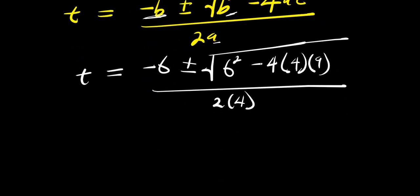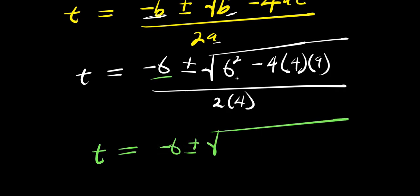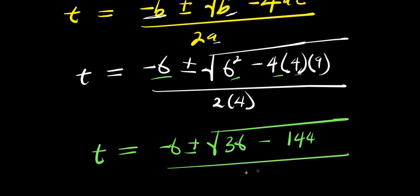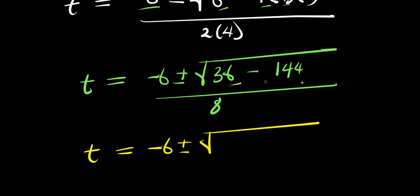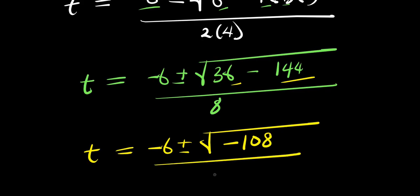Substituting into the formula: t equals negative 6 plus or minus square root of 6 squared minus 4 times 4 times 9, divided by 2 times 4. This gives 36 minus 144 under the square root, which is negative 108, divided by 8.